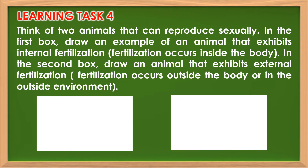Grade 5 learners, do this activity. Think of two animals that can reproduce sexually. In the first box, draw an example of an animal that exhibits internal fertilization. In the second box, draw an animal that exhibits external fertilization.